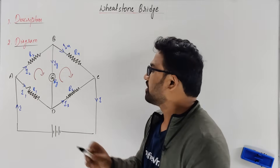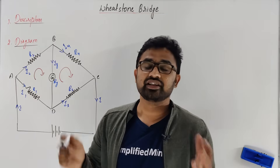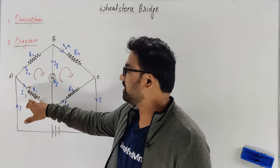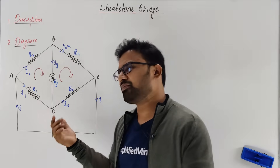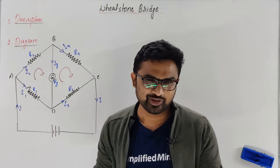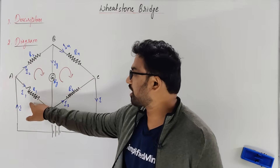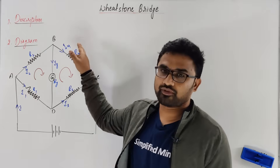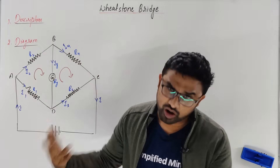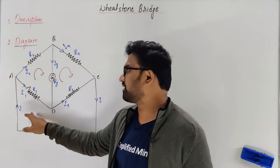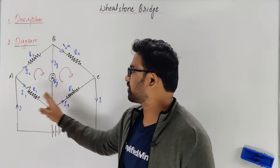What is balanced condition? Whenever there is no current flowing in the galvanometer, that's called balanced condition. In the balanced condition, the ratio R1/R2 equals R3/R4. Sometimes you can take PQ, RS notation also — do not worry. You remember: R1/R2 = R3/R4, or R2/R1 = R4/R3, or R2 × R3 = R1 × R4.